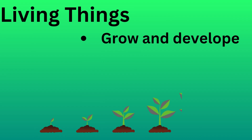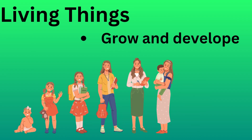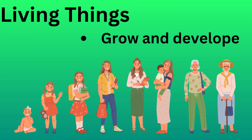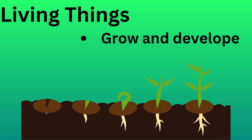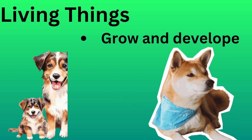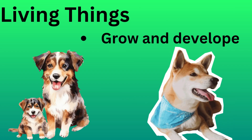Secondly, living things grow and develop. A baby grows into an adult, a seed grows into a plant and a puppy grows into a dog.